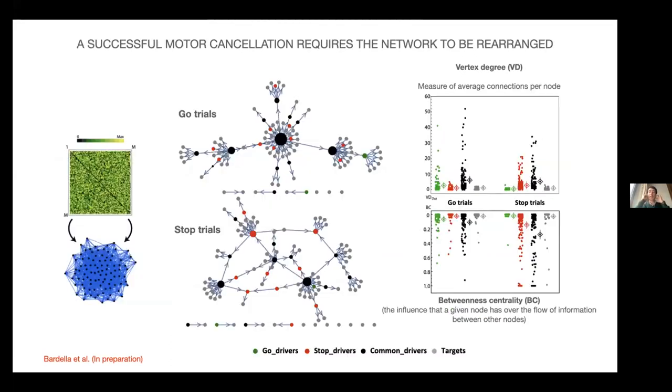To better explain these changes, that is a kind of reorganization of the network, we used a graph analysis approach. So you see here the same module from before, now expressed in graph terms, and you see that the network changes quite consistently from go trials to stop trials. And this is quite expressed by the fact that in the go trials, the hubs are essentially the common drivers—so the drivers that are communicating with all of the rest—while in the stop trials, hubs are also the stop modules.